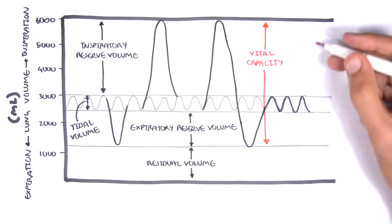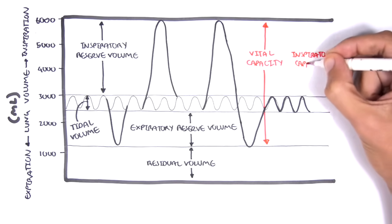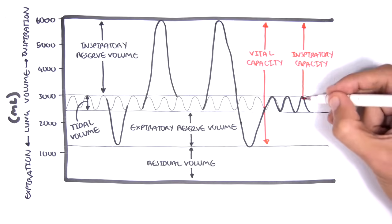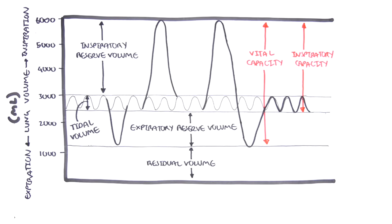The maximum amount of air inspired from the end expiratory level is the inspiratory capacity, which is about 3.5 liters. So, it's essentially the inspiratory reserve volume plus the tidal volume.